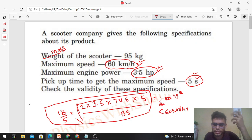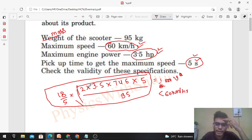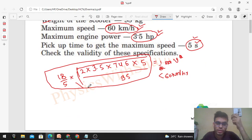Or second method: for this given speed, given maximum speed that is 60 kilometer per hour, we want to find out the maximum power of the engine required. So let's say the power of engine that is required for this maximum speed in five seconds is P max.